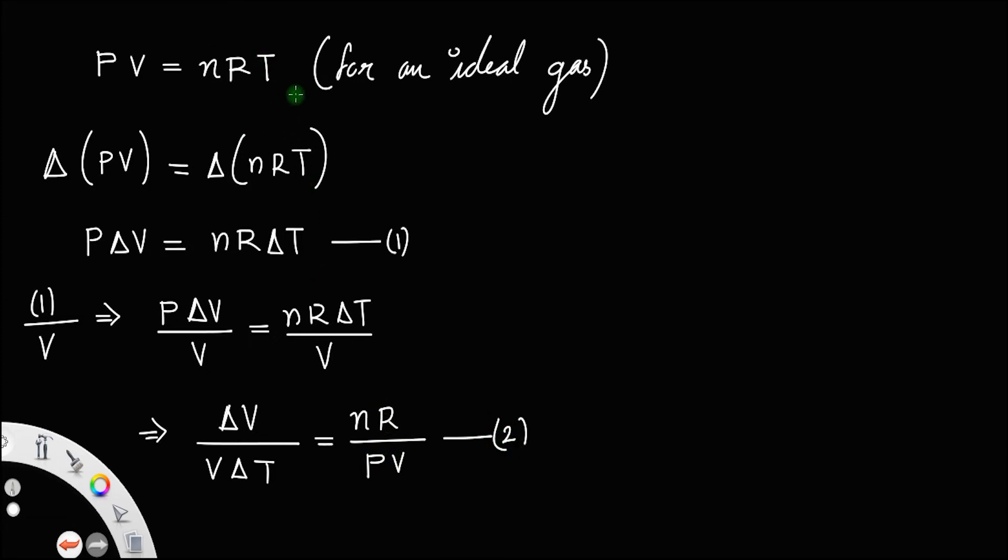Again, if you take the ideal gas equation and rearrange it, taking nR to the left, you get PV by nR equal to T, or if you take the reciprocal, that is nR by PV, then it will be 1 by T.